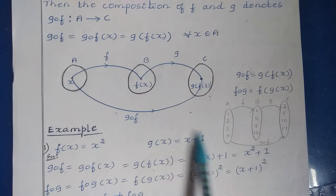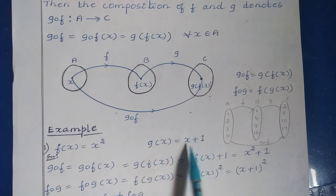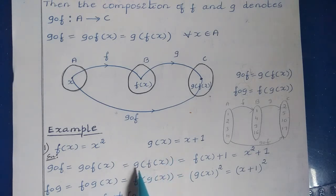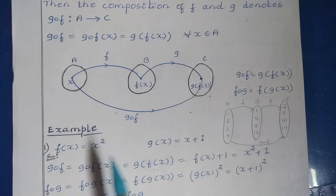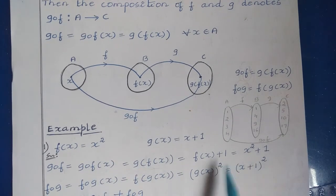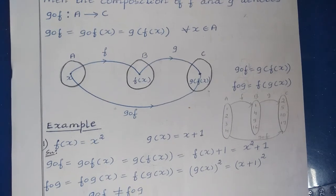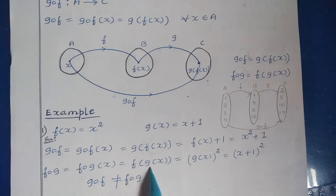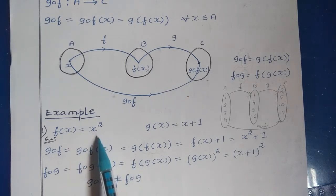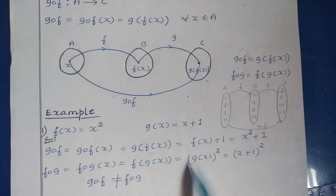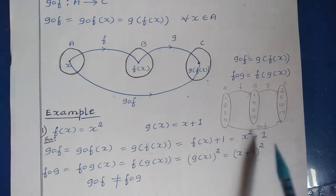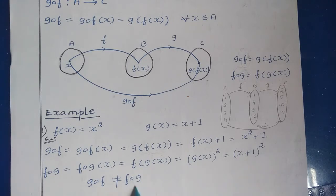For gof(x) = g(f(x)), we substitute f(x) into g. Since g(x) = x + 1, replacing x with f(x) gives f(x) + 1 = x² + 1. For fog(x) = f(g(x)), we substitute g(x) into f. Since f(x) = x², replacing x with g(x) gives g(x)² = (x + 1)². You can observe that gof ≠ fog: we got x² + 1 versus (x + 1)².